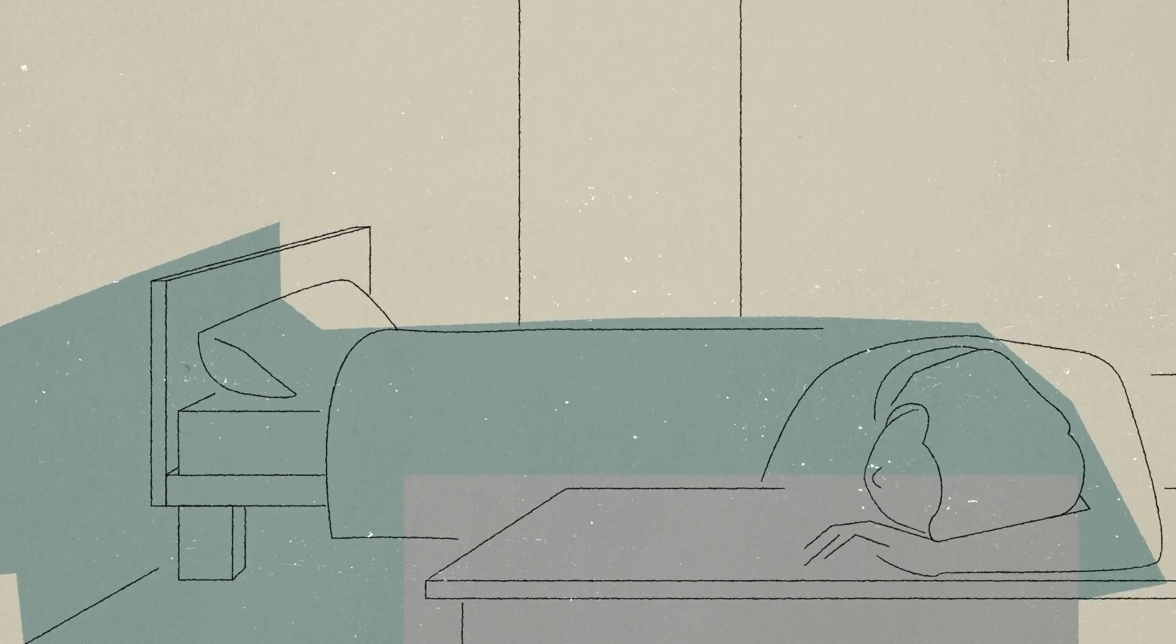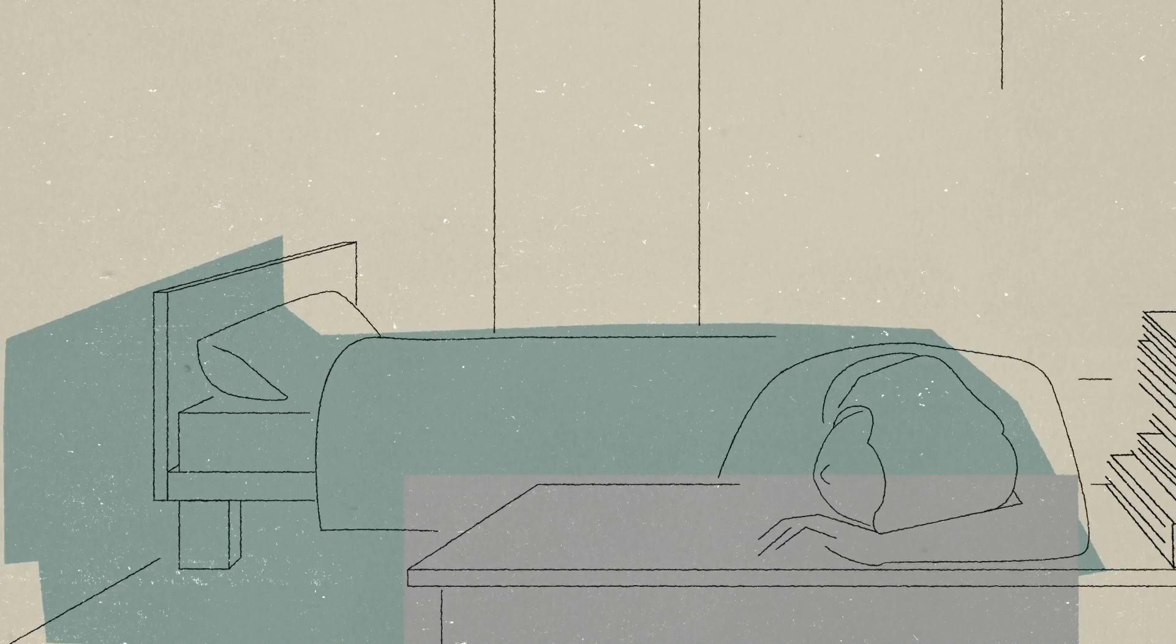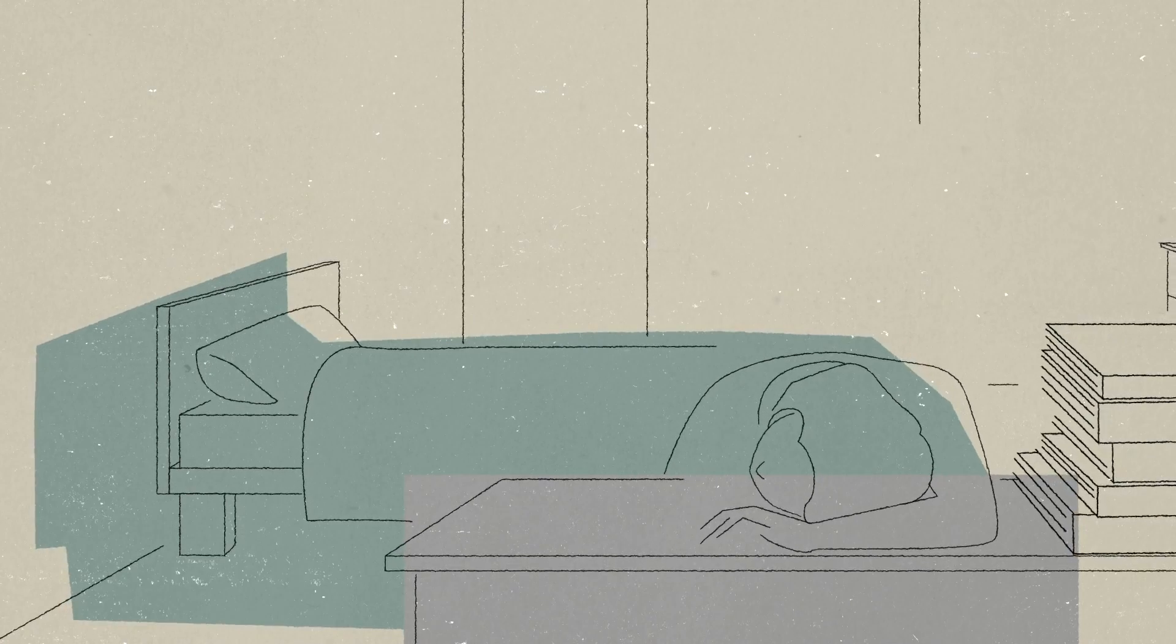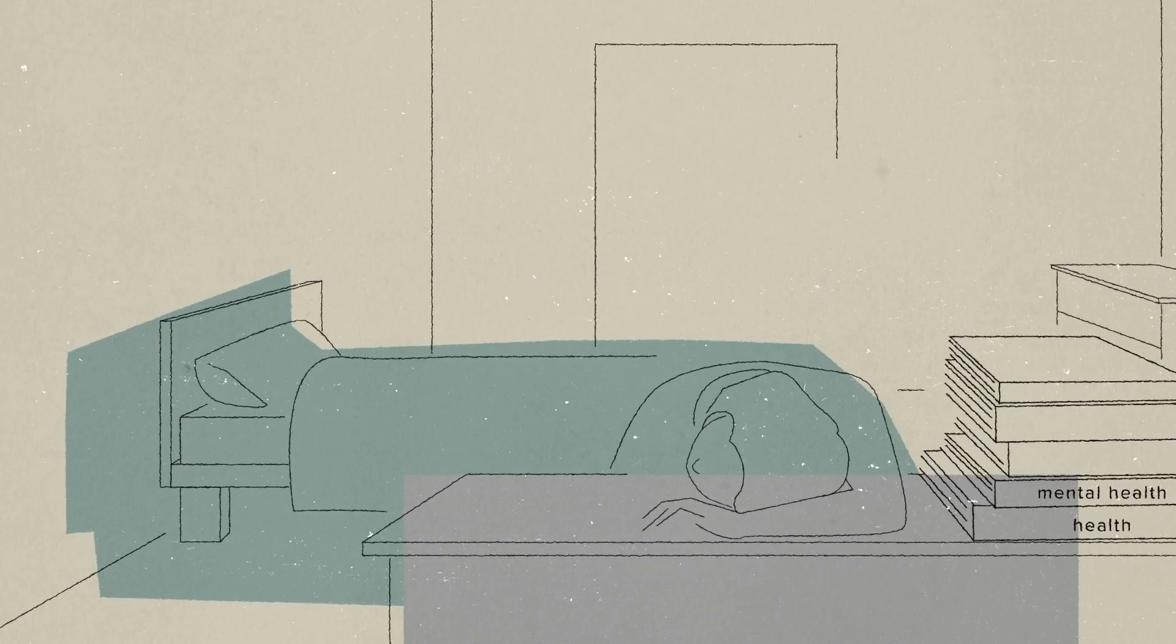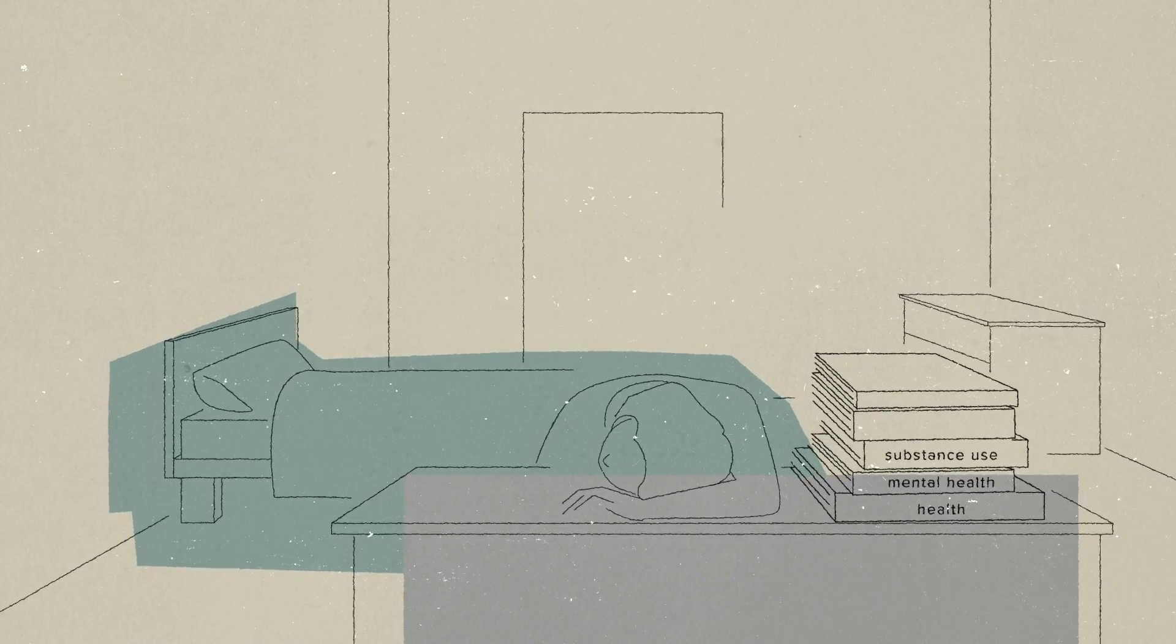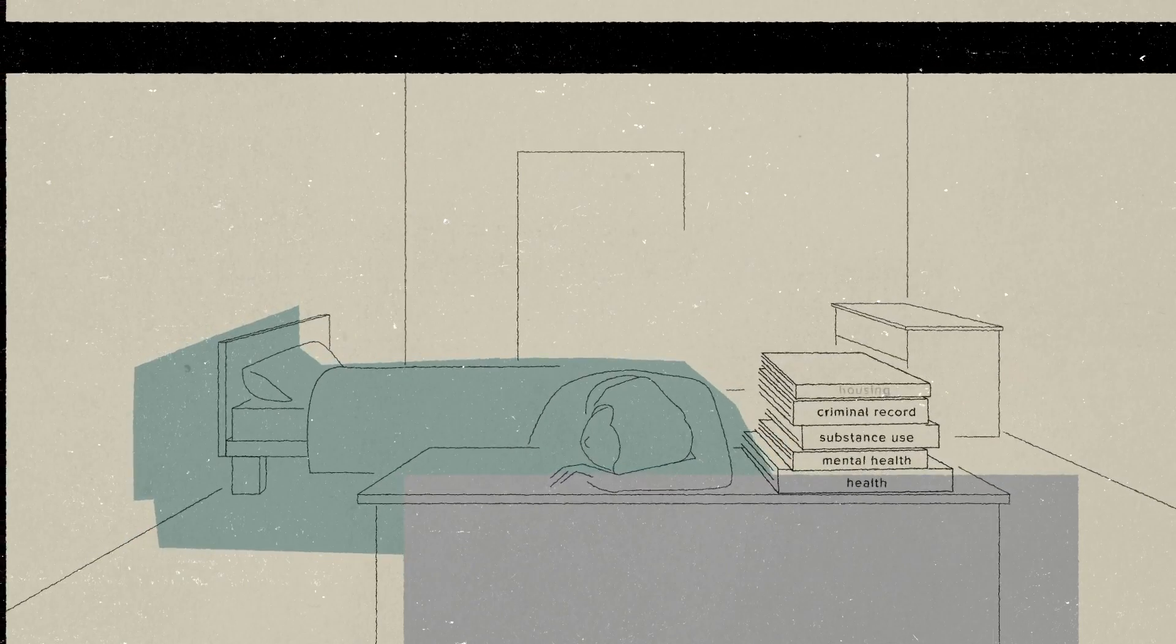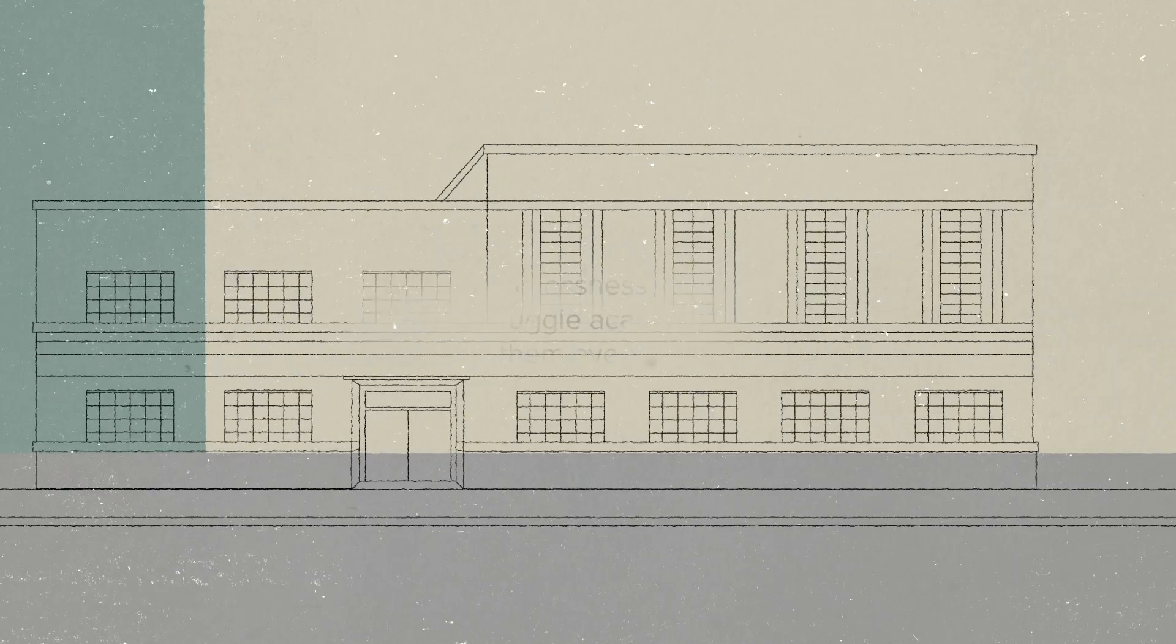These youth are coming in in crisis, and so even just to get to the point where school is the thing that they're ready to focus on, they have to have all these other basic needs met. They have to have their health needs met, their mental health needs met. If they're struggling with substance use, if they're struggling with potentially having a criminal record that they're trying to deal with, they're struggling to figure out where am I going to live long term. To have this as well, I think it's been kind of a double whammy for them.